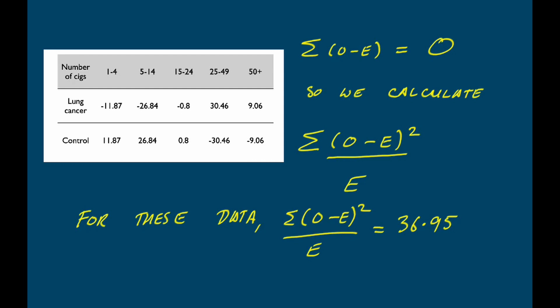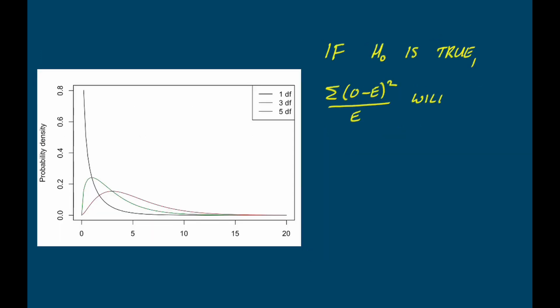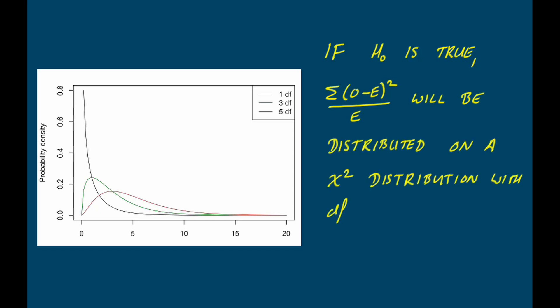If the null hypothesis is true, we would expect this calculated value to fall on a chi-square distribution, which tells us the probability of getting a particular value if the null hypothesis is true. The shape of the chi-square distribution changes quite a lot as the number of degrees of freedom increases — I'm showing examples with 1, 3, and 5 degrees of freedom. For a chi-square test, the degrees of freedom equal the number of rows in the contingency table minus 1, multiplied by the number of columns minus 1. In our case we've got two rows and five columns, so the degrees of freedom are one times four, which is four.